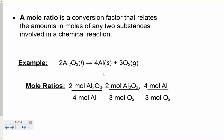When we talk about mole ratios, we're using another conversion factor. This conversion factor relates to the amount of moles between any two substances in a chemical reaction. In this example, we have two moles of aluminum oxide that decomposes to form four moles of aluminum and three moles of oxygen. This is the balanced chemical reaction, and the two, the four, and the three are the mole ratios, or the molar amounts of each reactant or product involved in this reaction.